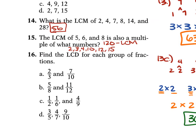For problem 16, find the Least Common Denominator for each group of fractions. For A, fractions with denominators 3 and 10: the LCD is 30. For B, denominators 8 and 12: LCD is 24. For C, fractions 1 half, 1 sixth, and 4 ninths with denominators 2, 6, and 9: 9 times 2 is 18, and 6 goes into 18, so does 2 — LCD is 18. For D, denominators 5, 7, and 10: LCD is 70.